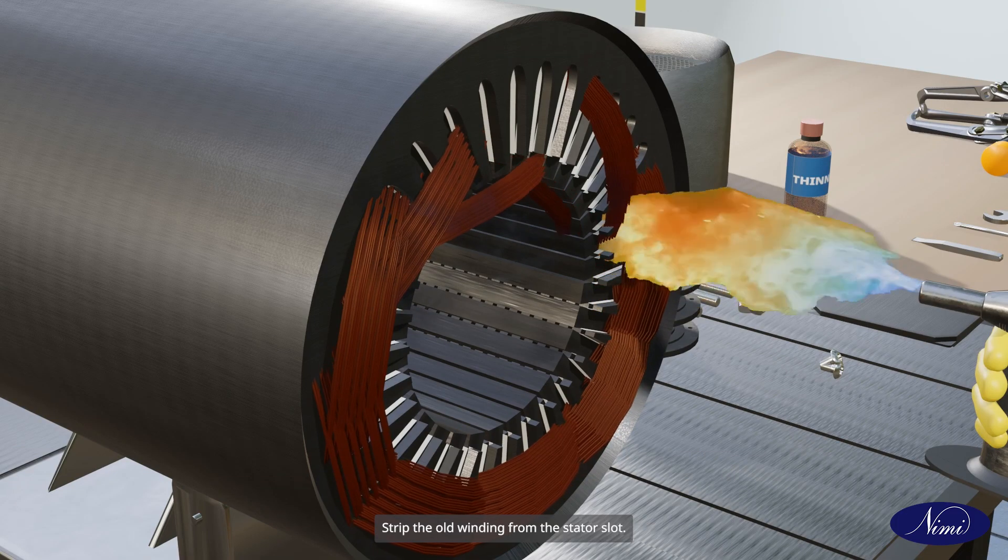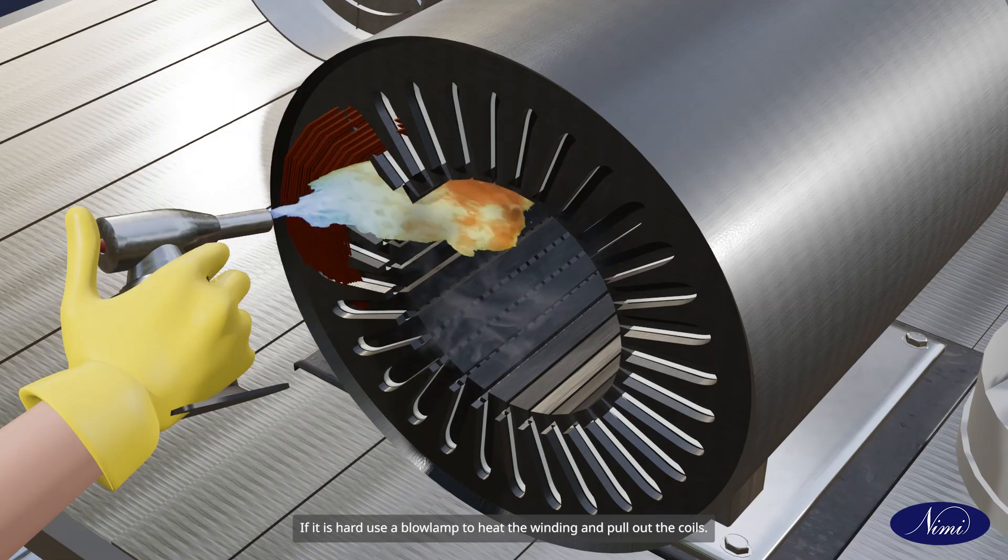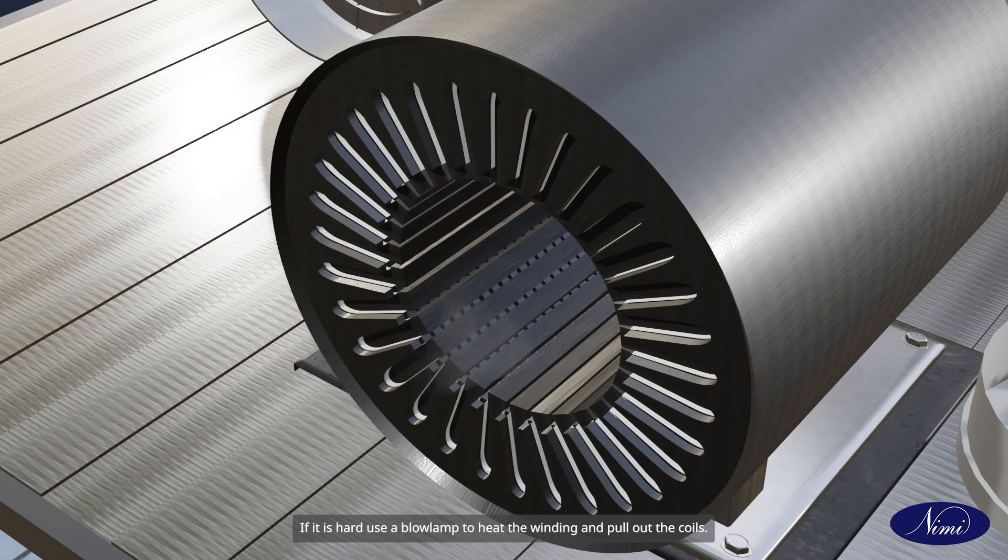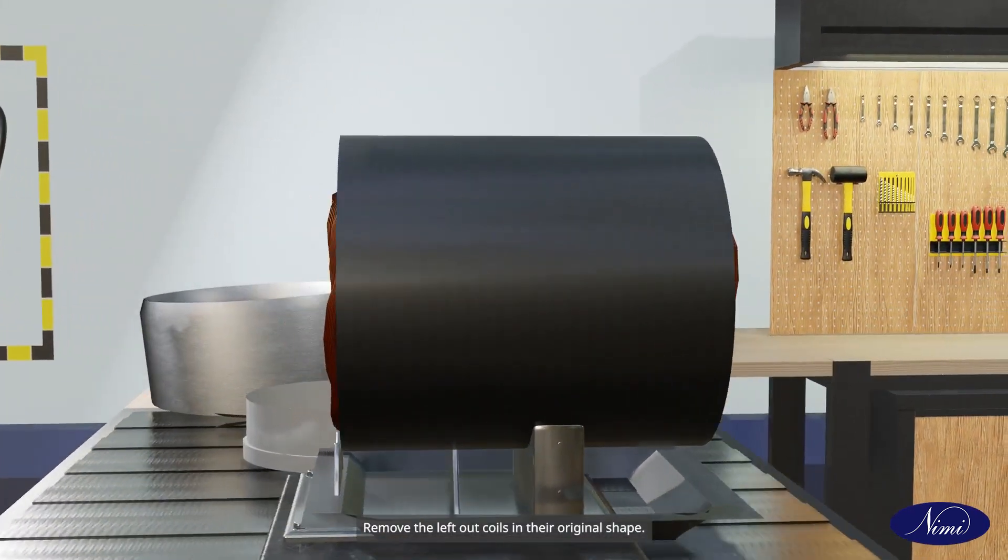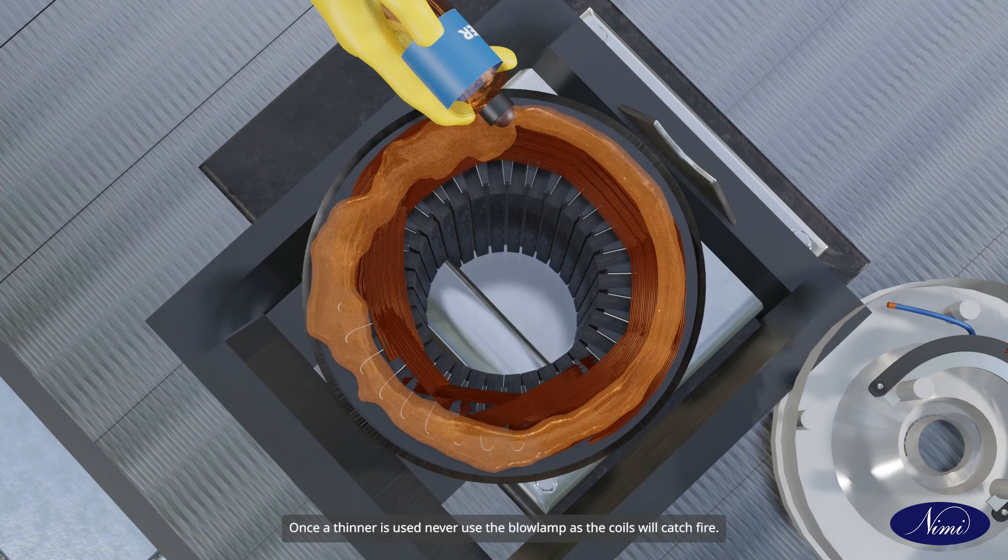Strip the old winding from the stator slot. If it is hard, use a blow lamp to heat the winding and pull out the coils. Remove the left out coils in their original shape. Use a thinner to loosen the coils. Once a thinner is used, never use the blow lamp as the coils will catch fire.